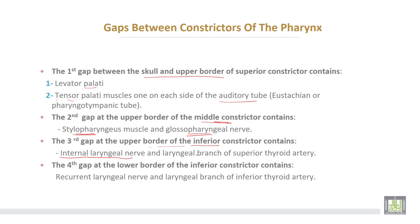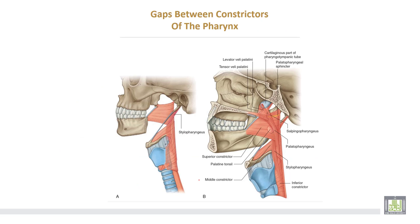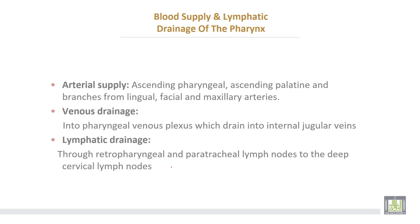The third gap is at the upper border of the inferior constrictor and contains the internal laryngeal nerve and the laryngeal branch of the superior thyroid artery. The fourth gap is at the lower border of the inferior constrictor and contains the recurrent laryngeal nerve and the laryngeal branch of the inferior thyroid artery.